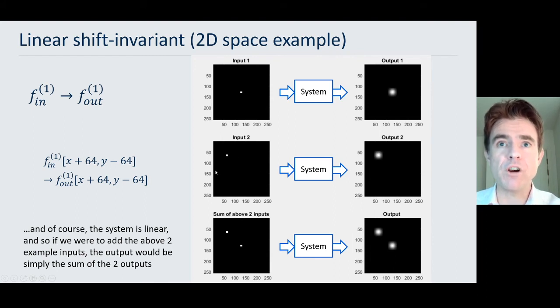It doesn't matter wherever we move that point source around inside the field of view of the scanner, if this is an LSI, linear shift invariant system, then this response will look identical everywhere in the output. And of course, this is a linear system, so I could also add together these two point sources or these two stars in the night sky, and then when I run it through my linear shift invariant system, the output predictably is just the sum of the individual outputs. That is a hallmark of a linear system.